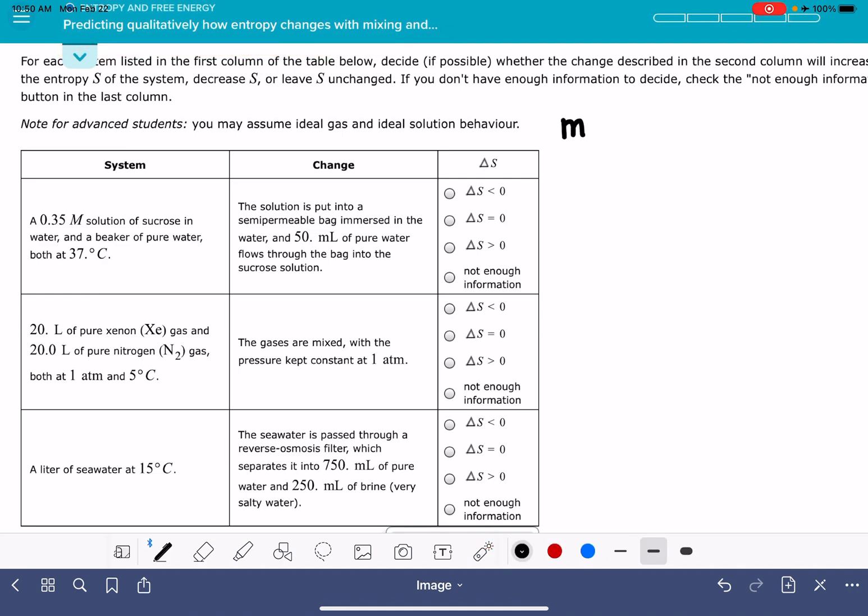In general, if you are mixing substances together, this is going to cause an increase in the entropy, an increase in the randomness of the system. And if you are separating substances from each other, it would cause a decrease in entropy.